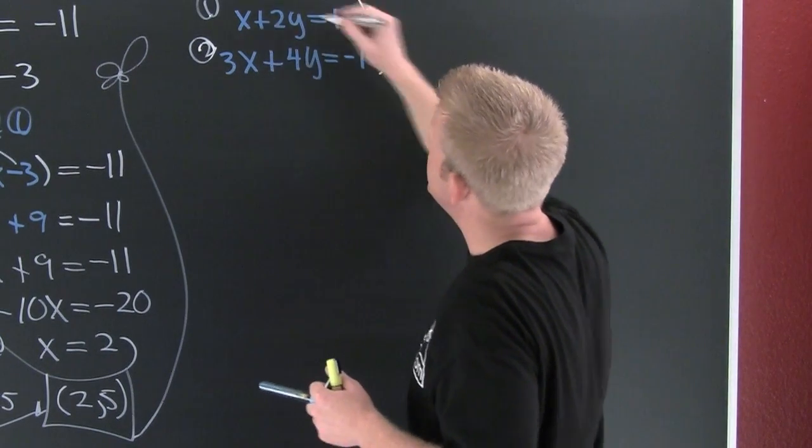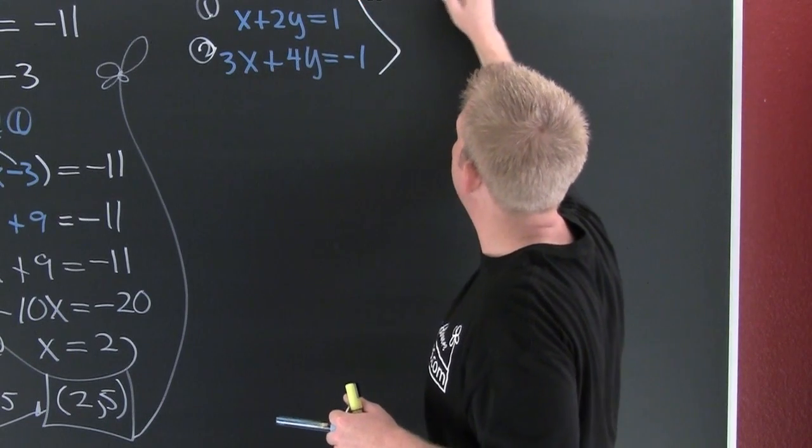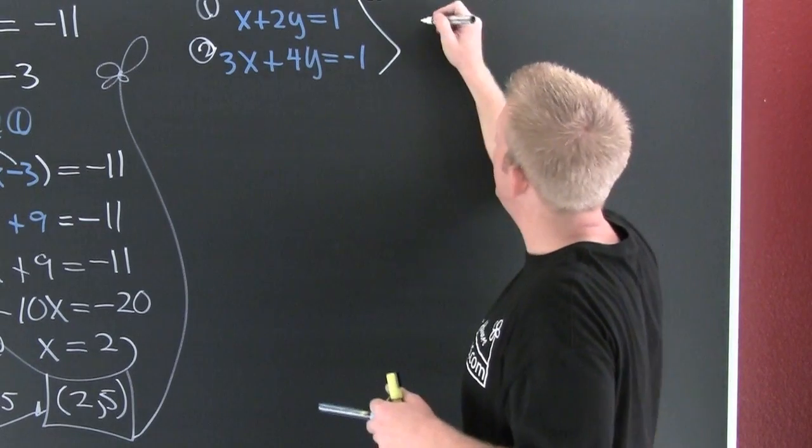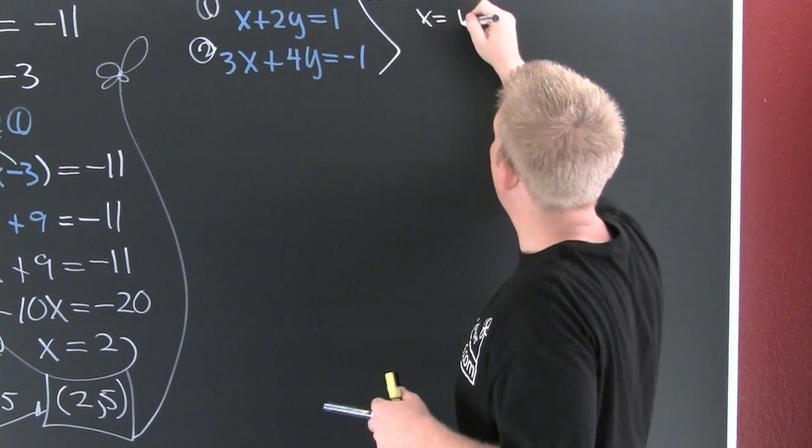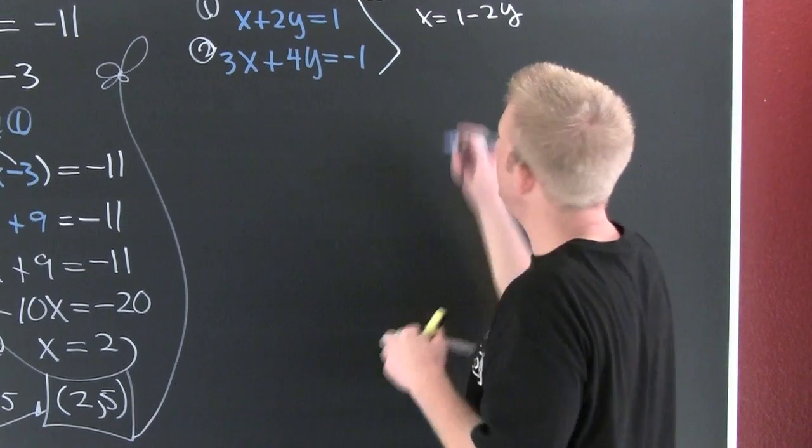A little more systems. So I'm gonna solve one for x. So then I'm gonna see that I got x is equal to 1 minus 2y.